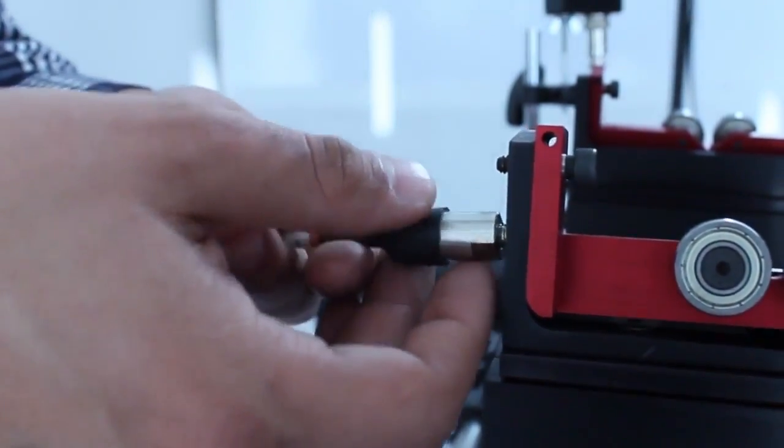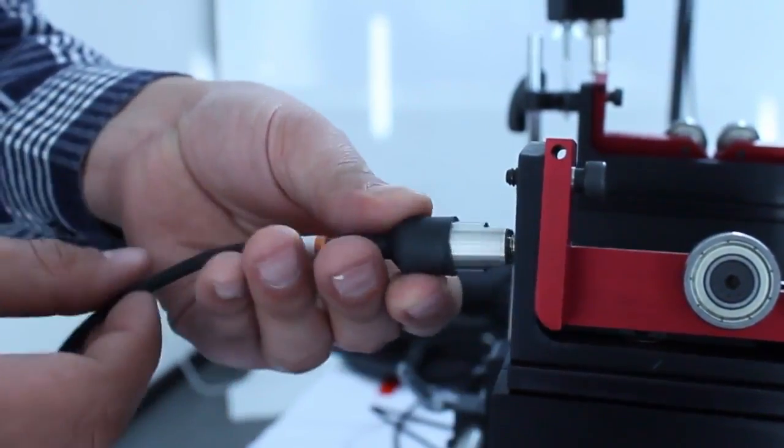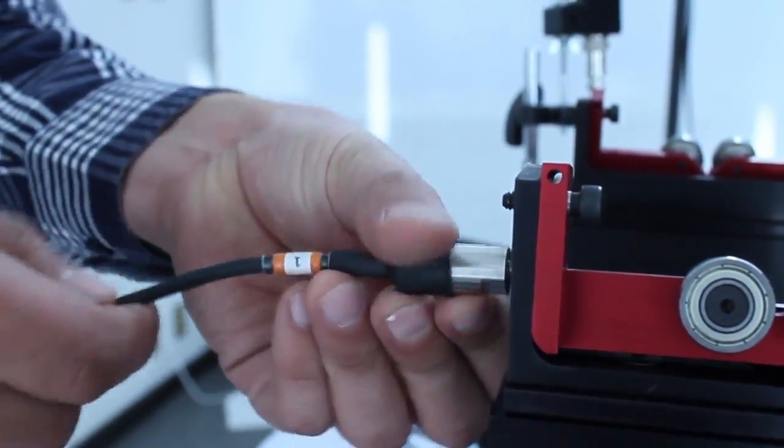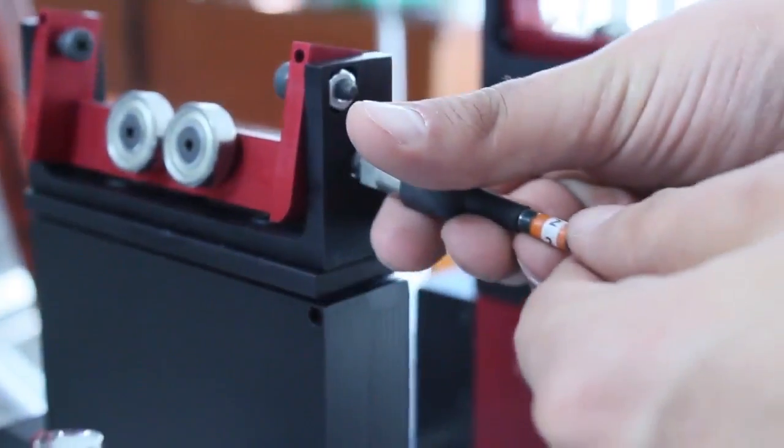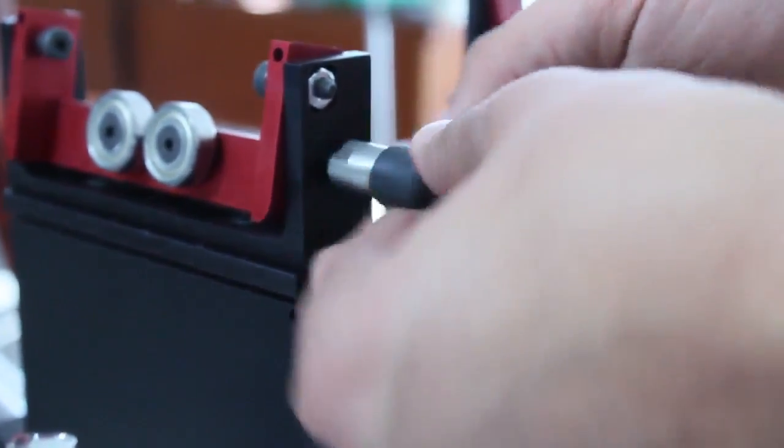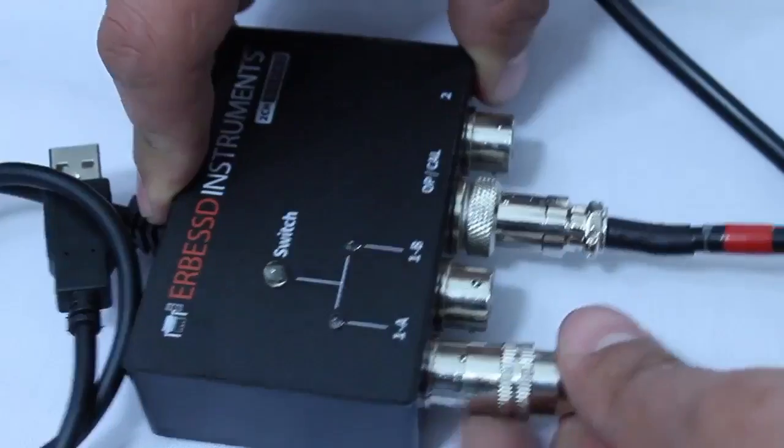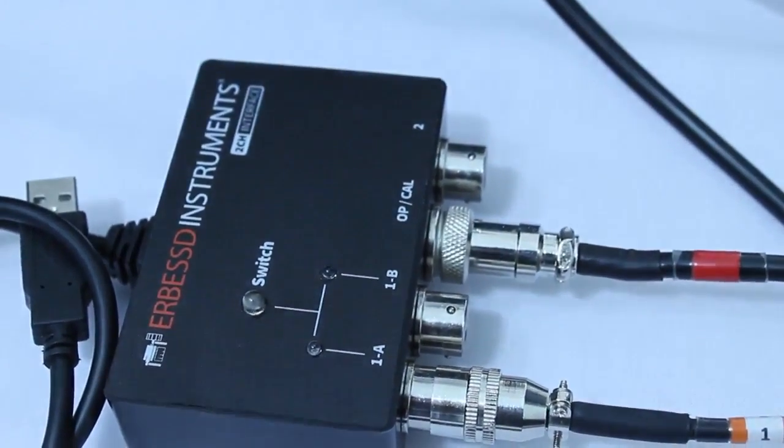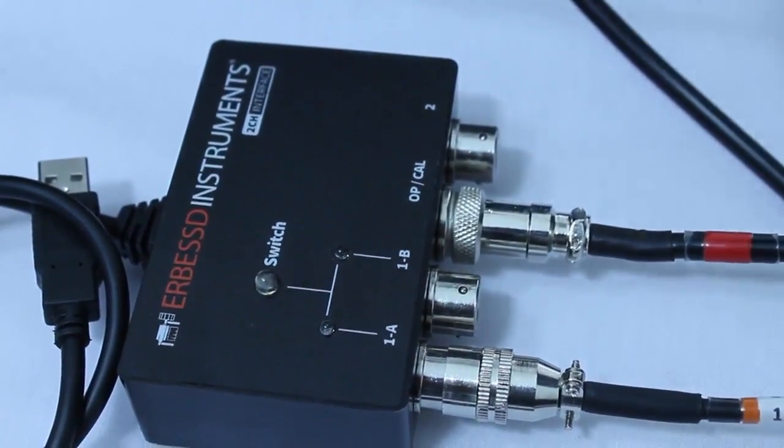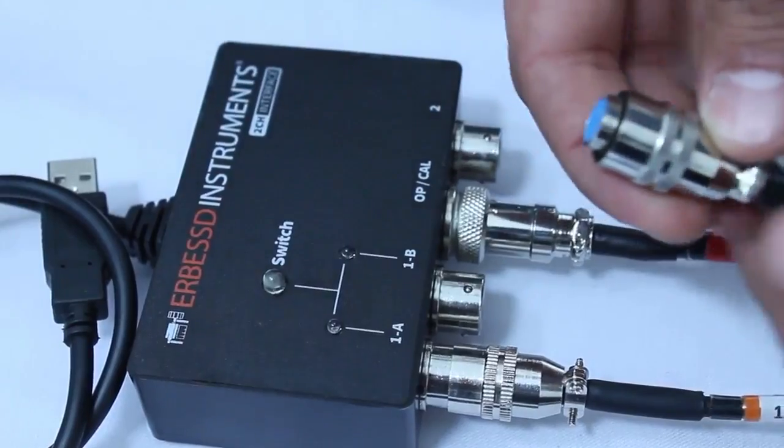Now we screw the vibration sensors on the soft bearing suspensions without twisting the cable to avoid damages. It's very important to turn the entire cable when you screw the sensors. Sensor for plane 1 is connected on port 1A and sensor for plane 2 goes on port 1B.